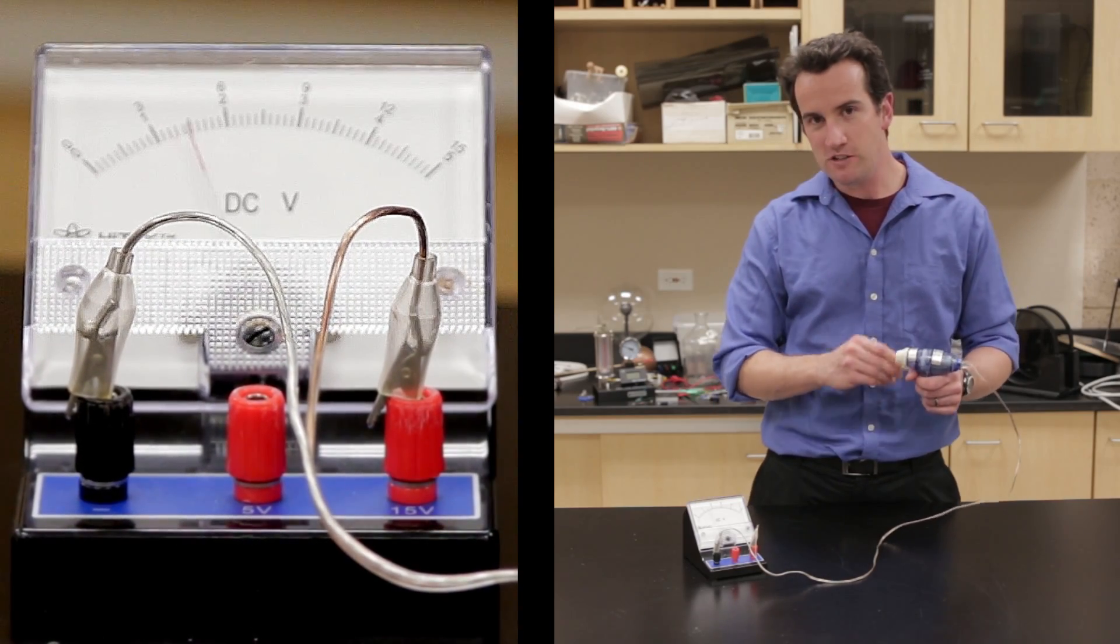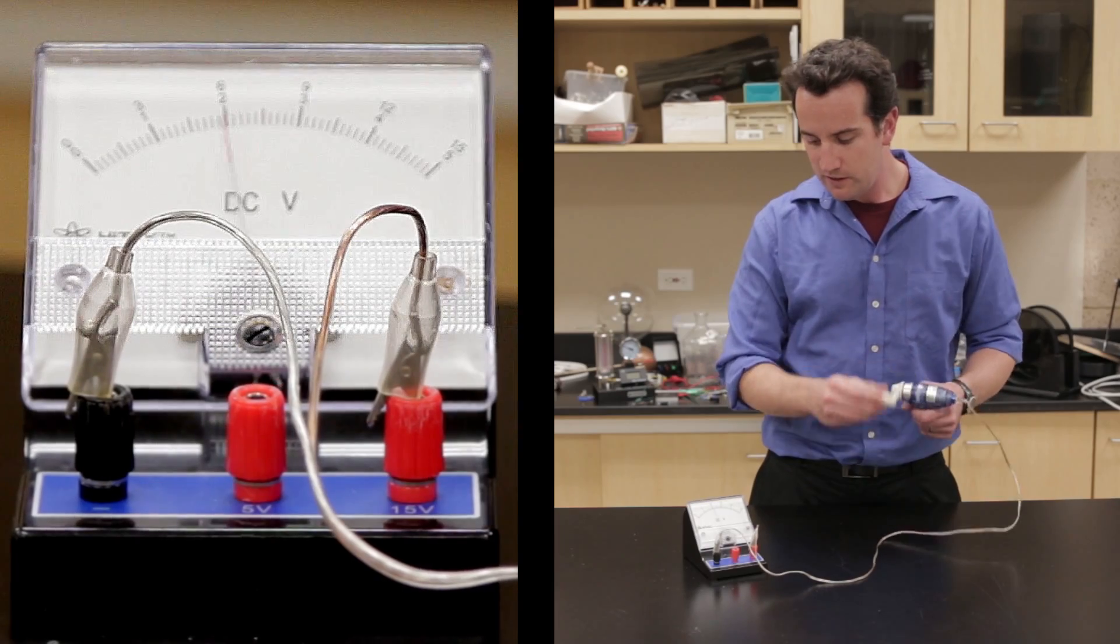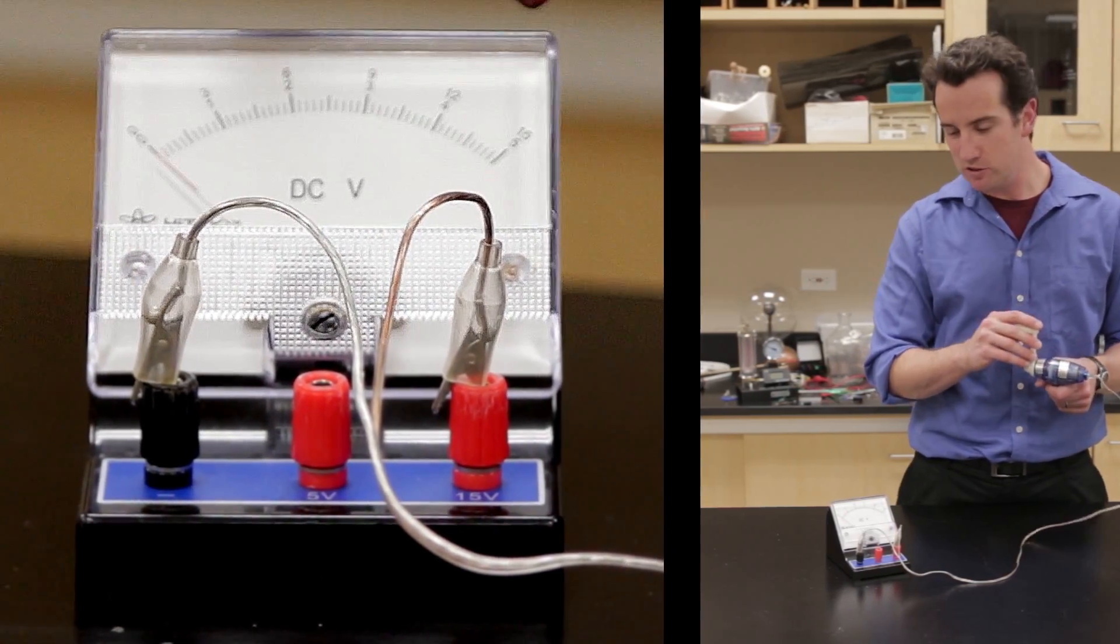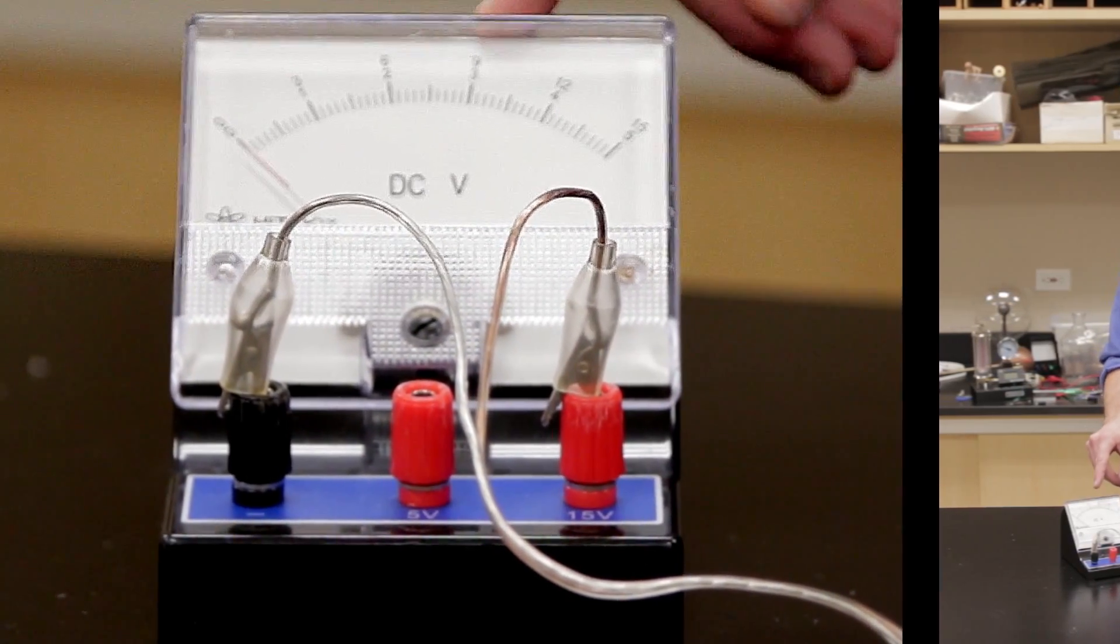Also, you'll notice that the faster you crank, the higher the voltage is produced. Investigate this and see what frequency is required to get 6 volts compared to 9 volts.